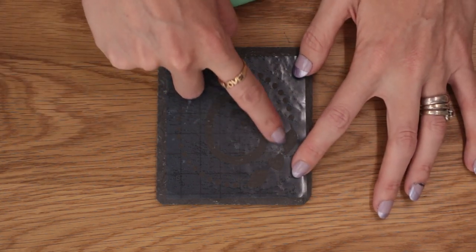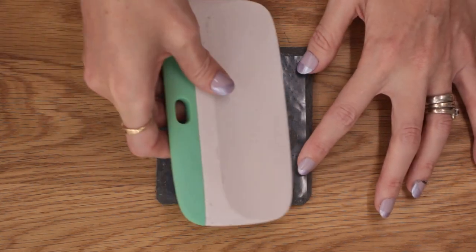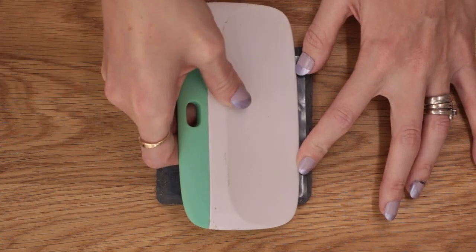If we've got any tiny gaps or anything then the etching cream is going to seep through and you won't get that nice clean edge.